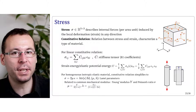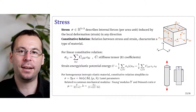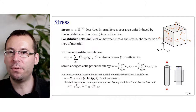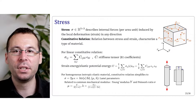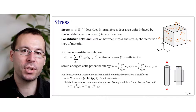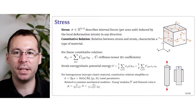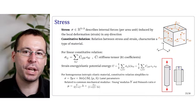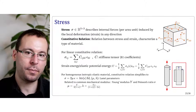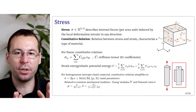The Young modulus is the elongation of the material with respect to the force exerted in this direction, while the Poisson ratio characterizes the compression of the material in one direction when extended in the orthogonal one.